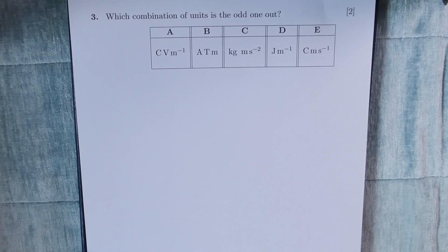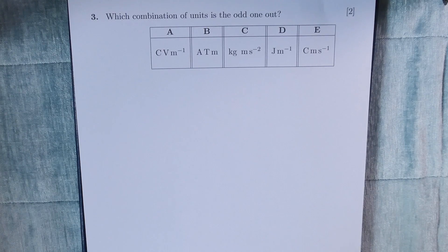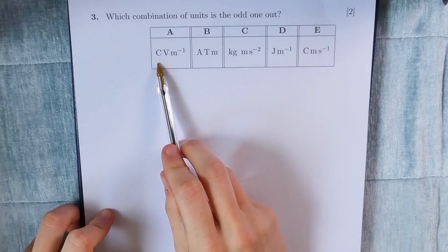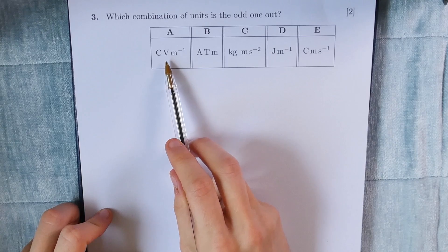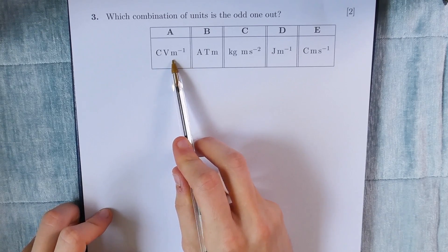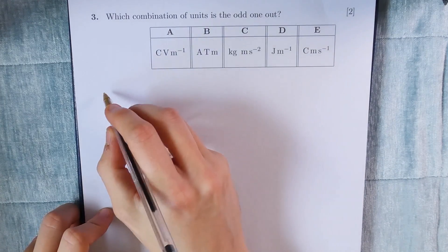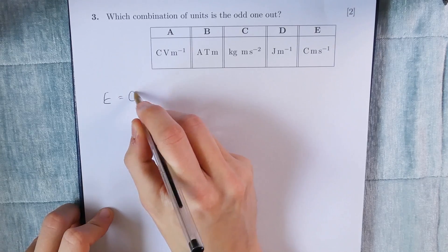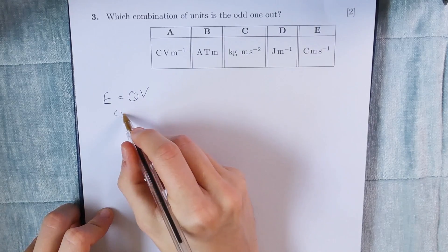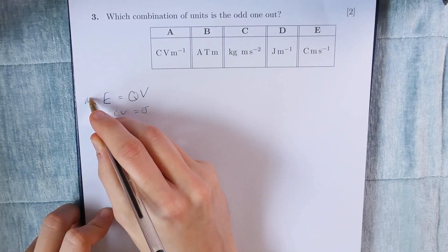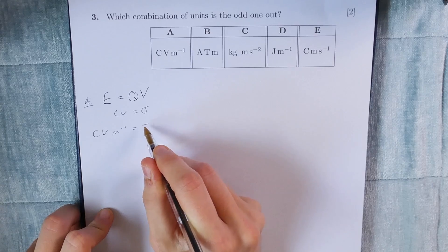Which combination of units is the odd one out? We're given five sets of units and must decide which is the odd one out. Let's consider A: coulomb volts per meter. Coulomb is the unit for charge, volt is the unit for voltage, and meter is a unit for length. Using E equals QV, coulomb volts is equivalent to joules. So coulomb volts per meter is equivalent to joules per meter. Since work done equals force times distance, we can rearrange to get force equals energy divided by distance, meaning joules per meter is equivalent to the units for force — kilograms meters per second squared.